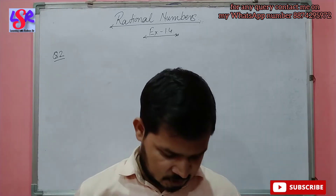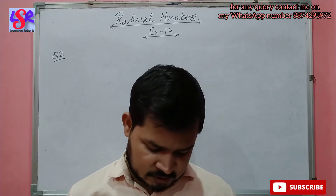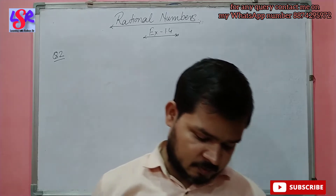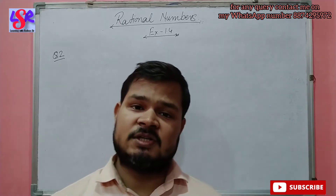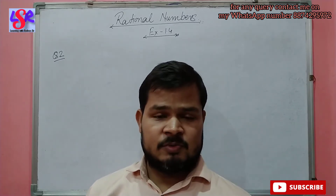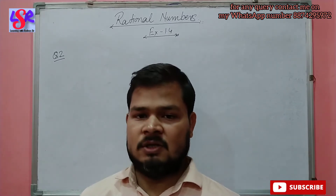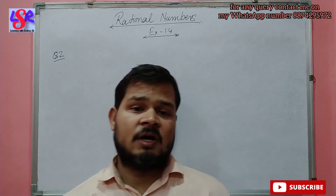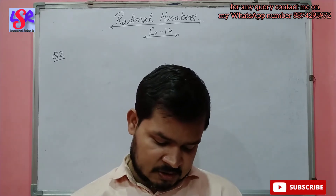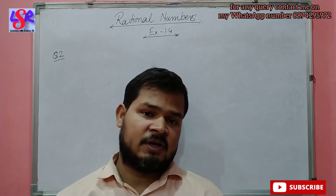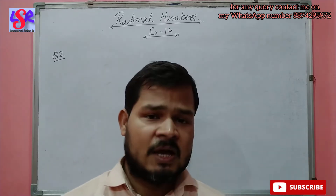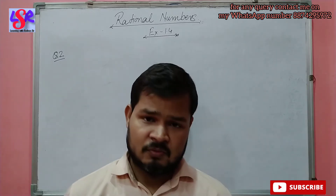Now we will do question number 2. In question number 2, we have to state whether the statement is true or false. The first one is: minus 9 upon 13 divided by 2 upon 7 is a rational number. Since we have two rational numbers being divided and the second number is not 0, the result is a rational number, so the statement is true. For the second one about the associative property — division does not follow the associative property, so that statement is false.